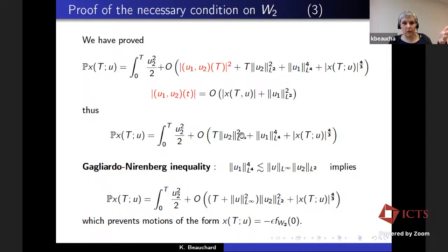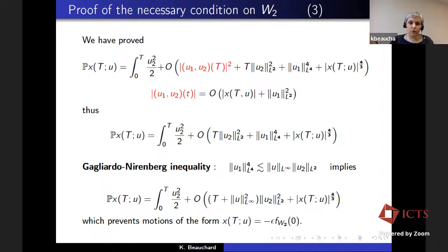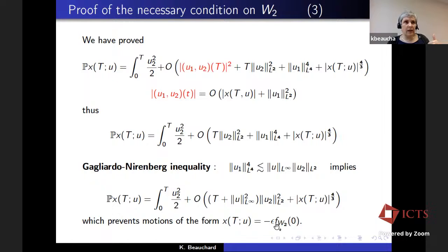Putting everything together, we get a new expression for the projection of x on FW2 of zero. The problematic term can be estimated by the Gagliardo-Nirenberg inequality: u1 is the first primitive of u, so its L4 norm can be estimated by a product of u in L-infinity and u2 in L2. Substituting into the previous formula, this term disappears and becomes u L-infinity squared times u2 L2 squared. So when time is small and control is small in L-infinity, this can be absorbed by the drift, preventing motion along minus FW2 of zero.